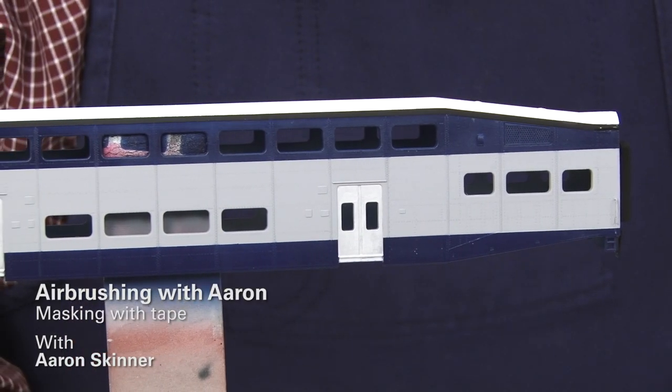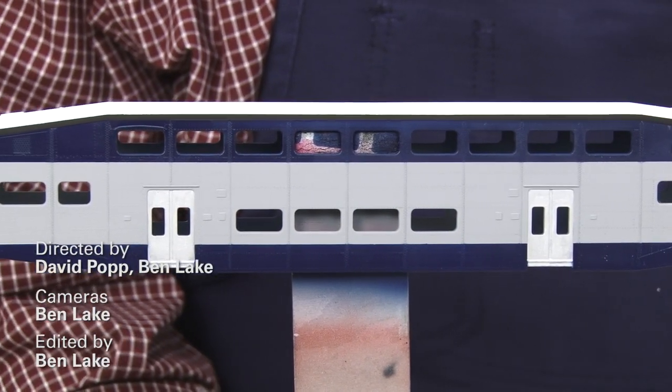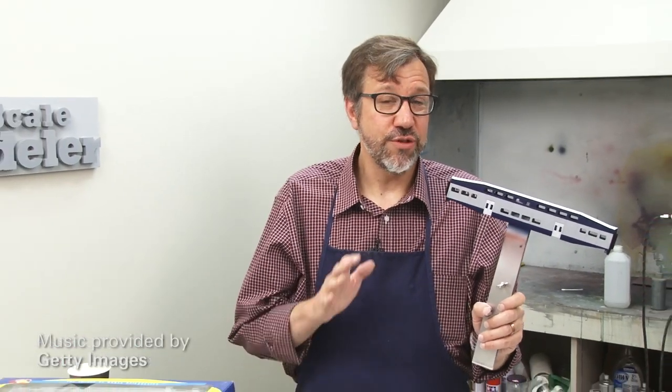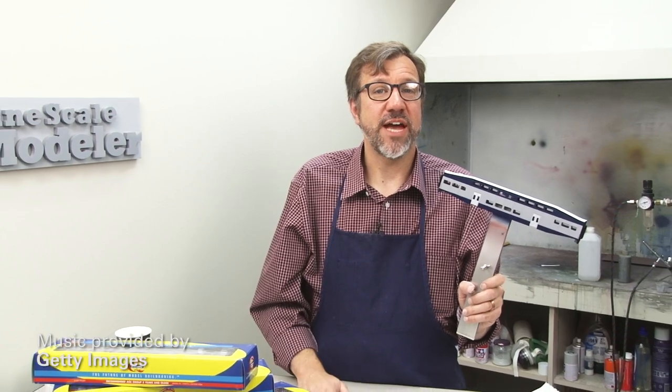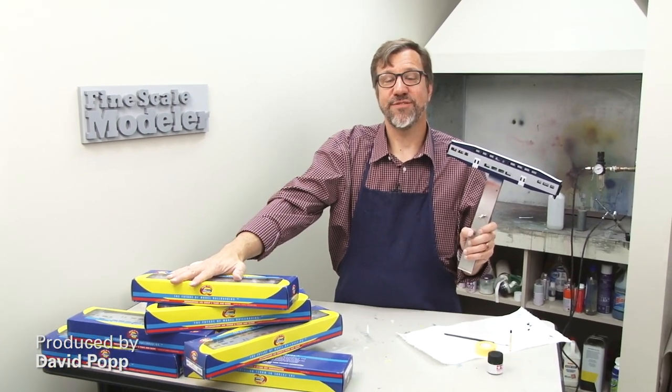So that is our passenger car basically done. Masked and painted. All it really needs now is some decals to really dress it out nicely. That does show you the basic techniques for straight line masking using tape. Now, all I have to do is the rest of these.